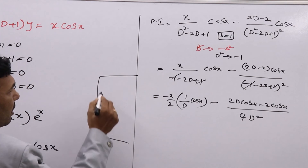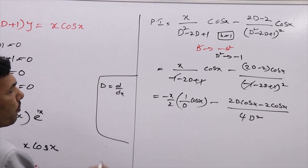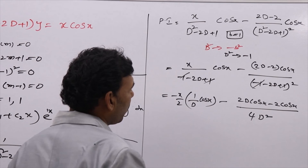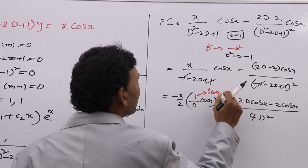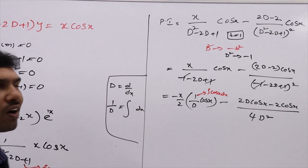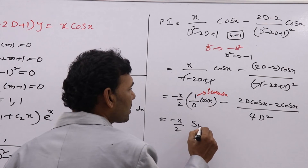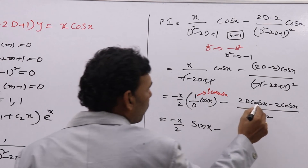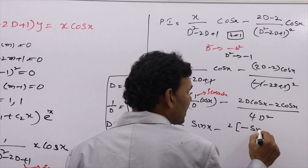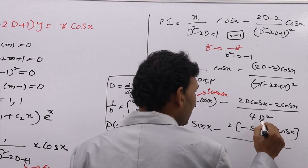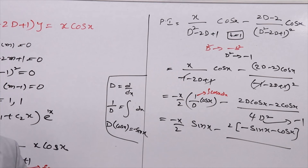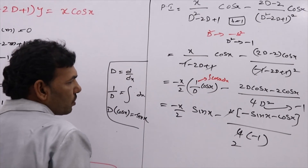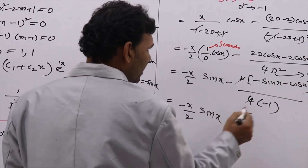We know that D means differentiation and 1/D means integration. So 1/D · cos(x) = ∫cos(x)dx = sin(x). And D·cos(x) = minus sin(x). Wherever you have D² in the denominator, replace it again by minus 1: 4×(minus 1) = minus 4. After simplification, you will get: minus x/2 · sin(x) minus (1/2)·(sin(x) + cos(x)).